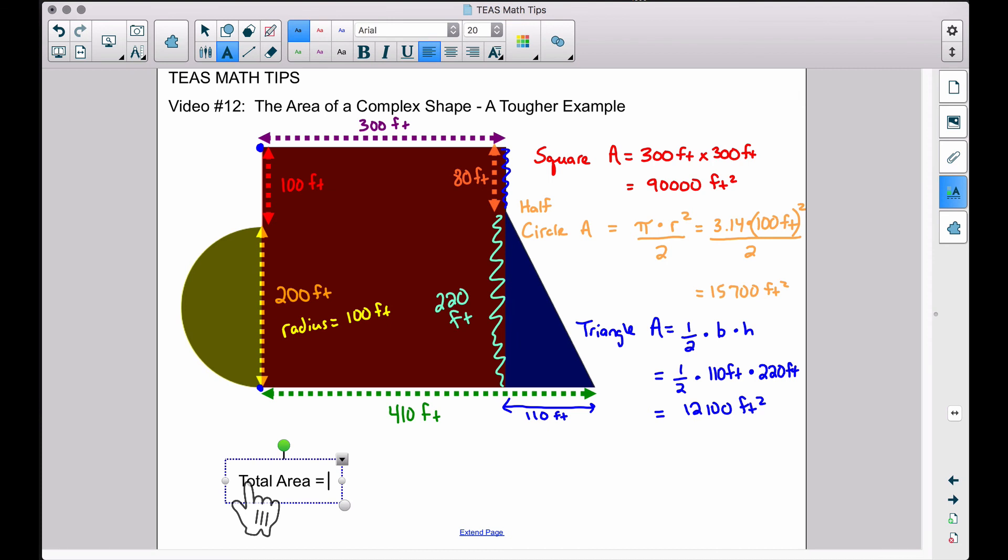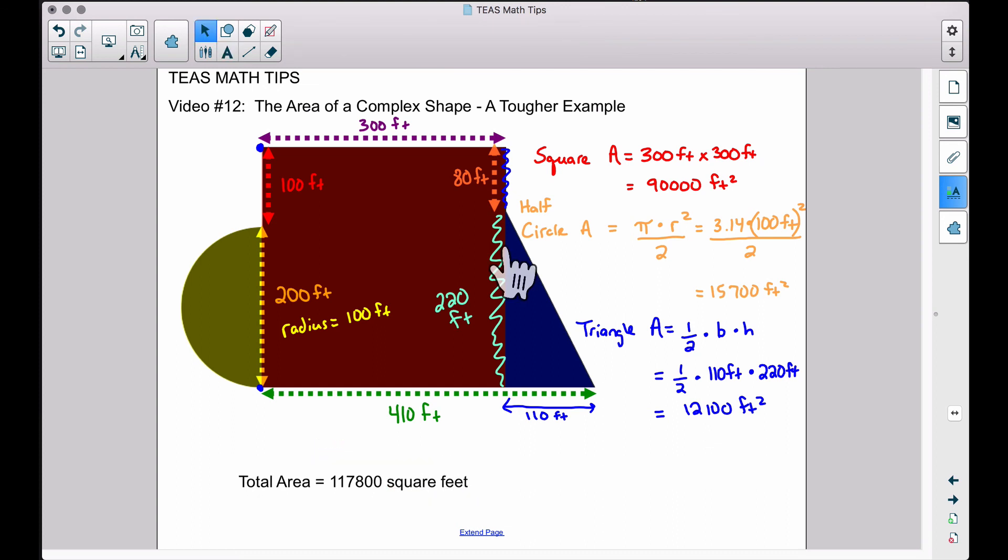And finally, what we can do here for the total area—let's take the 90,000 plus the 15,700 plus the 12,100 square feet to get our total area of this complex shape. And adding up those three numbers, you will get 117,800 square feet for the total area.